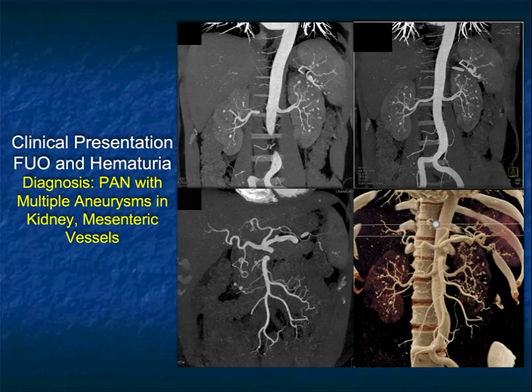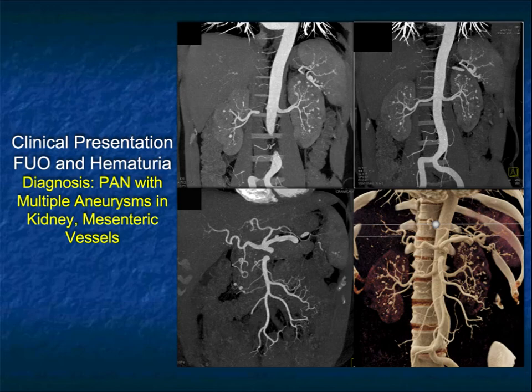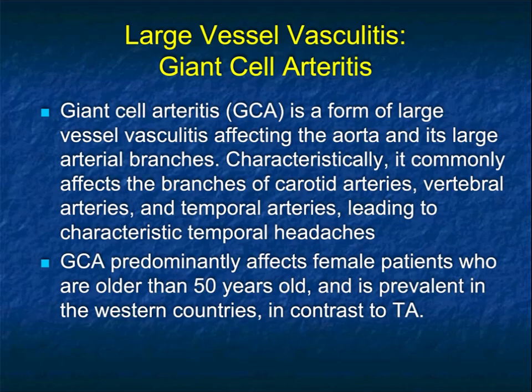Here's a good example making the point. Several MIP images and a cinematic rendering are shown for a case of polyarteritis nodosa, where the original interpretation did not suggest multiple small aneurysms — which are extremely obvious in the kidneys, the splenic artery, and the SMA and its branches — because they were little dots no one really understood. It was only when we did the 3D that we could make a very specific diagnosis.